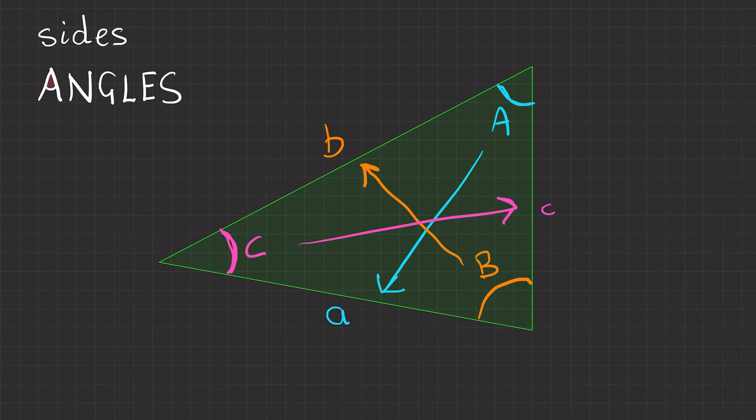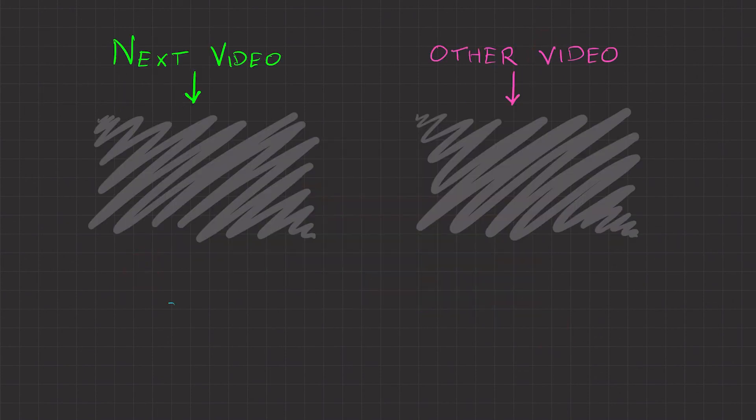One thing worth noting is you may not always see these angle letters on the inside. In fact, usually they're written on the outside to represent point A, B, and C. And that's it for this video. Thanks for watching, tune in to the next one.